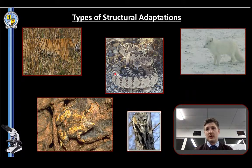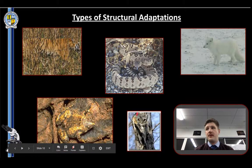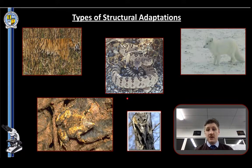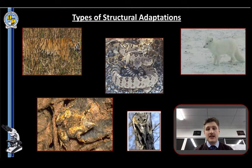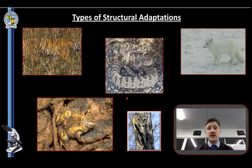Camouflage is one of the coolest and most well-known adaptations — see if you can spot all the organisms in these pictures; some are more obvious than others. There's the owl there. Camouflage does two things: it either helps you be protected from predators trying to find you, or it helps you hunt prey by being seen at the last minute. It's about obtaining food or protection — blending in with the environment.